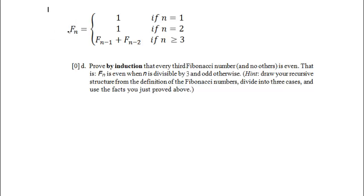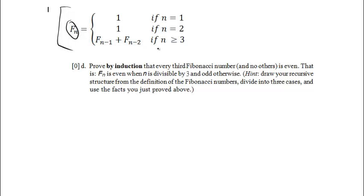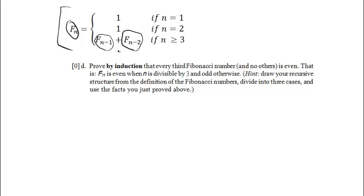At the top we have a recursive definition of the Fibonacci numbers. The nth Fibonacci number F sub n is equal to 1 if n equals 1, equal to 1 if n equals 2, and equal to F sub n minus 1 plus F sub n minus 2 if n is greater than or equal to 3. This is recursive because F sub n gets used in its own definition, with two recursive appearances — one to the n minus 1 and one to the n minus 2 Fibonacci number.